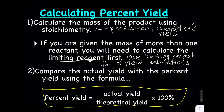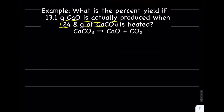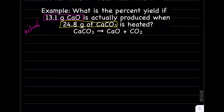Let's try a practice problem. What is the percent yield if 13.1 grams of calcium oxide is actually produced when 24.8 grams of calcium carbonate is heated? We've got two numbers — it almost looks like we're given two knowns, but we really only have one. We know about our reactant: 24.8 grams of CaCO3. We're also given information about one of the products — 13.1 grams of CaO is actually produced.